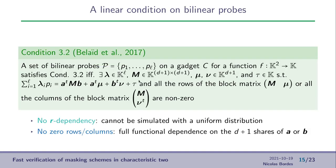So, for the easy-to-check condition first. In 2017, Belaid et al. produced this condition, which applies to bilinear probes. Bilinear probes are just probes that can be expressed as the sum of some AIBJ, some AI, some BJ, some additional random masks, called RI, plus, eventually, a constant. In general, in the masking schemes we are going to look at, all the probes are bilinear.